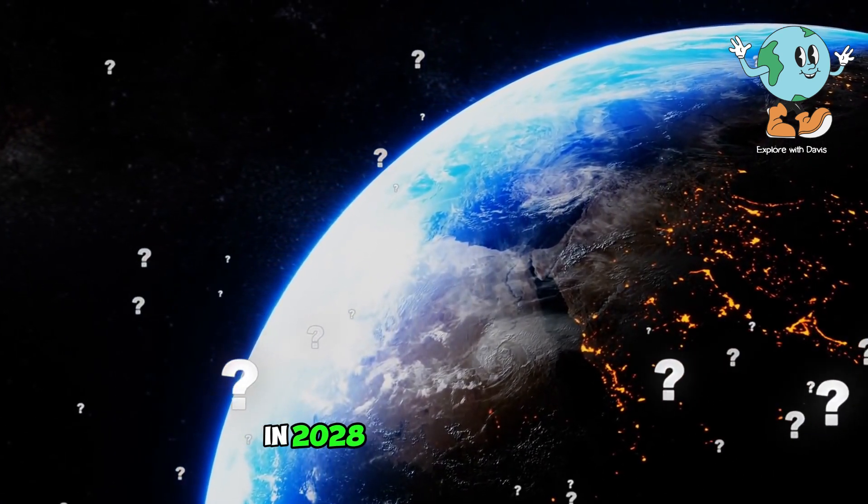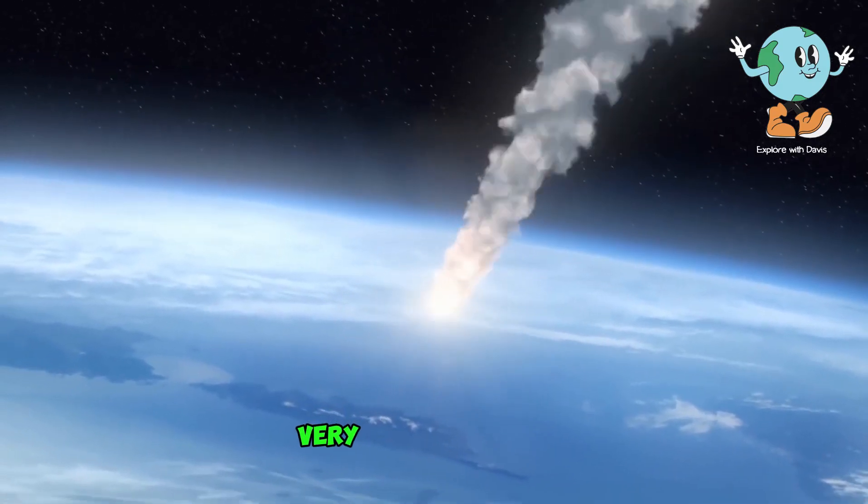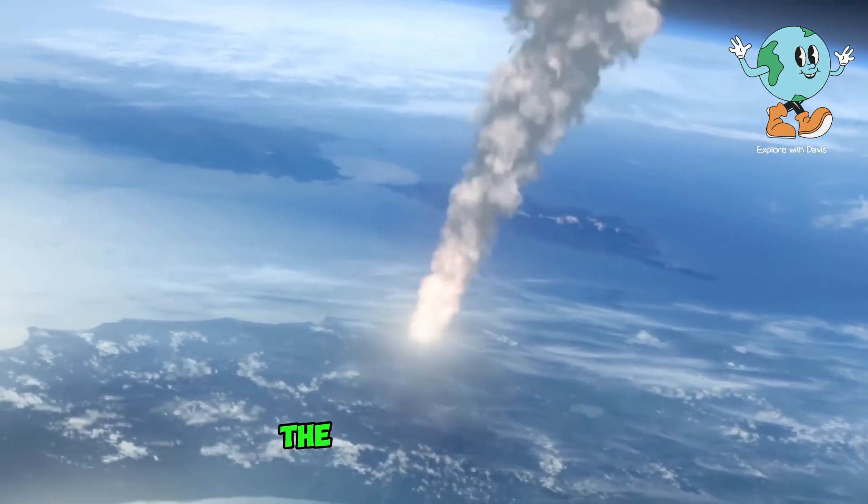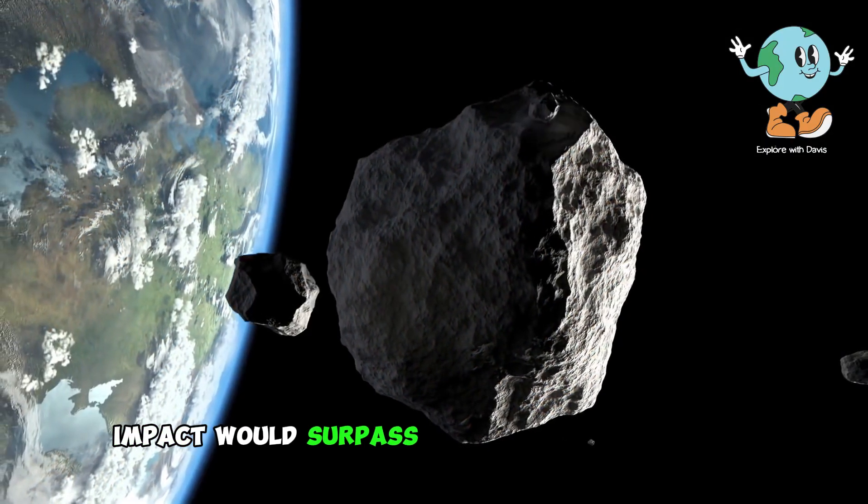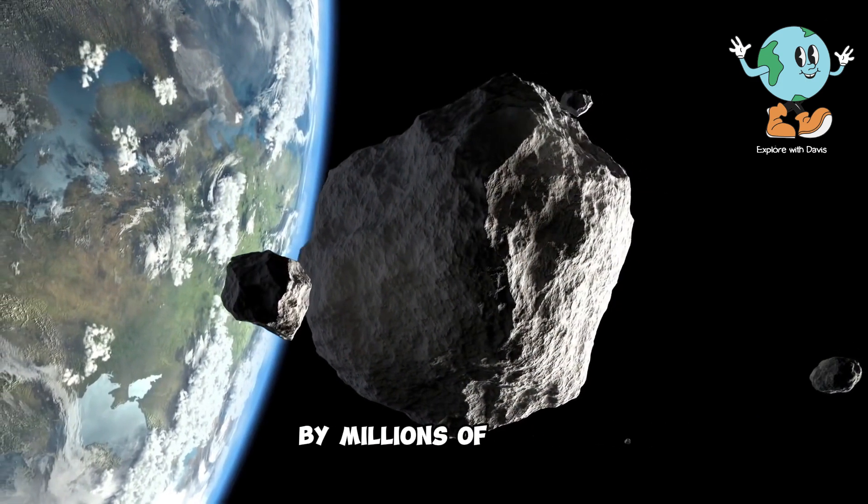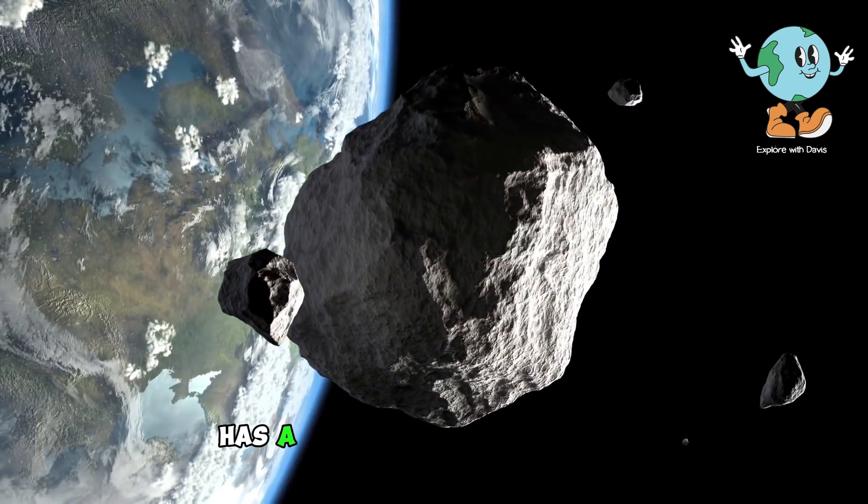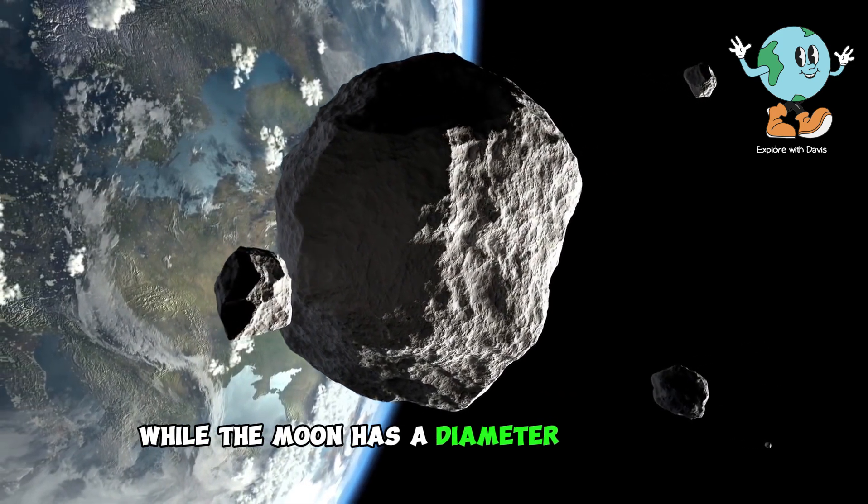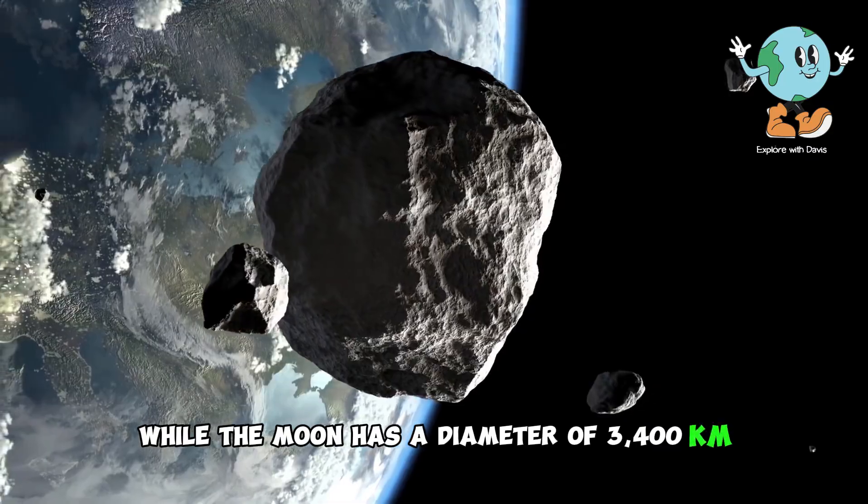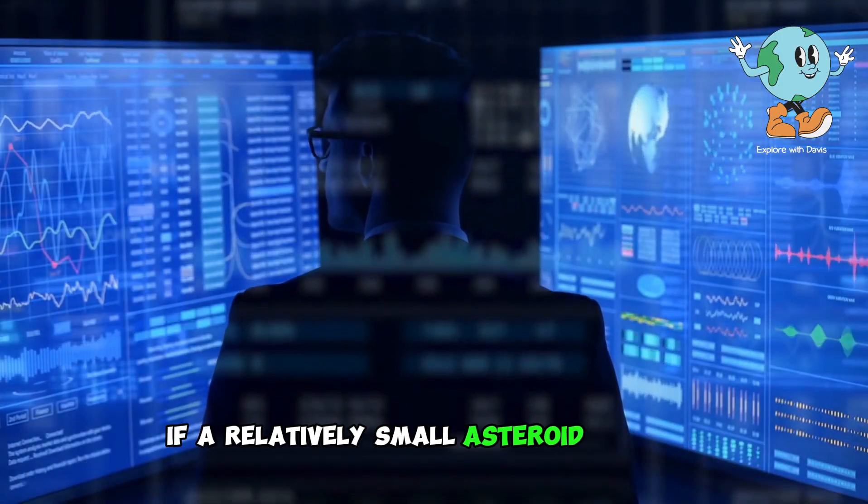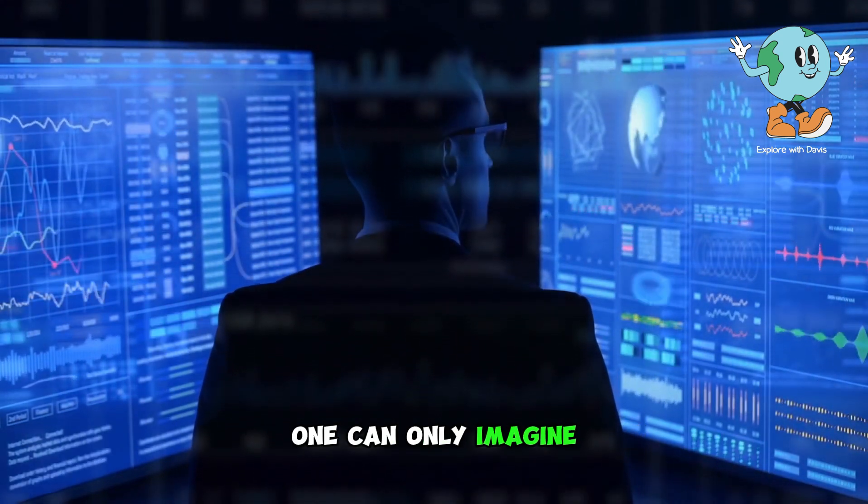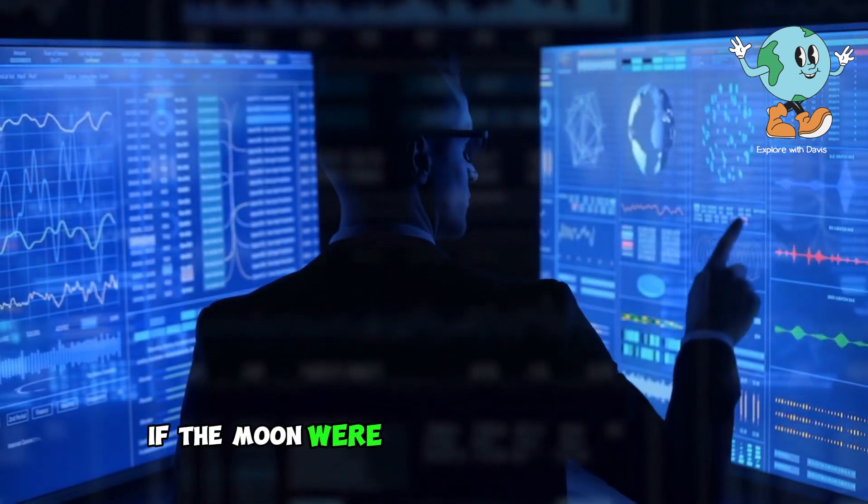For example, in 2028, the asteroid 1997 XF-11 will come very close to Earth. Although it is not projected to collide with Earth, scientists have estimated that the energy of such an impact would surpass that of a nuclear bomb by millions of times. What is astonishing is that this asteroid has a diameter of about 1.4 kilometers, while the moon has a diameter of 3,400 kilometers. If a relatively small asteroid like this can cause catastrophes surpassing nuclear disasters, one can only imagine the potential consequences if the moon were to be involved.